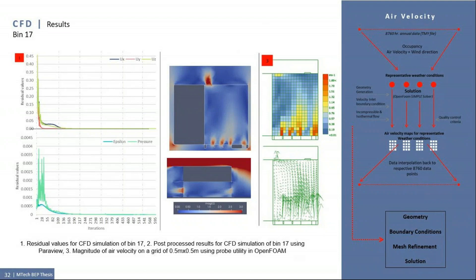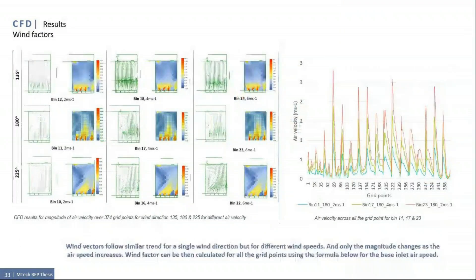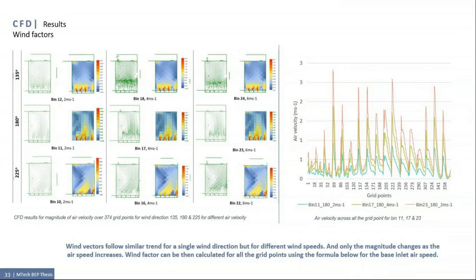The CFD results are of bin 17 with wind direction 180 and wind speed 6 meter per second. When analyzing the results of all the 24 CFD simulations, a relationship was formed between air velocity distribution across every grid point with the inlet air speed from the same wind direction. Indoor air velocity distribution for bins 11, 17, and 23 has been shown in the figure on the left. The wind direction in all these cases is 180 degree, with wind inlet speed as 2, 4, and 6 respectively. It can be observed that indoor air velocity increases proportionately as the inlet wind speed increases and hence a proportionate relationship has been found.